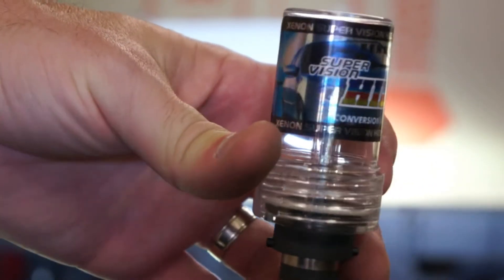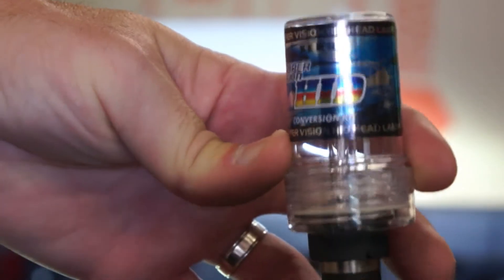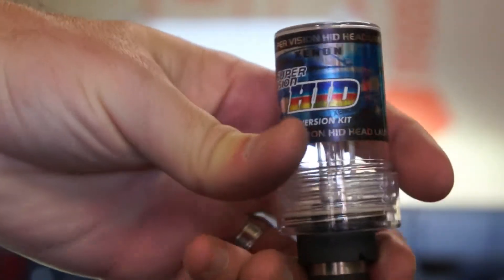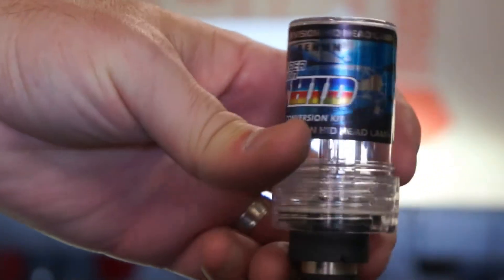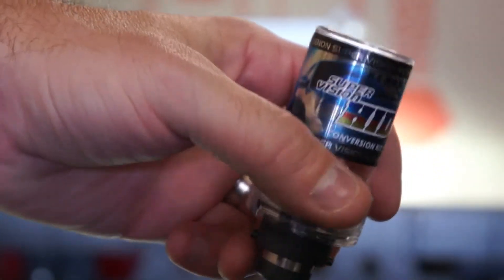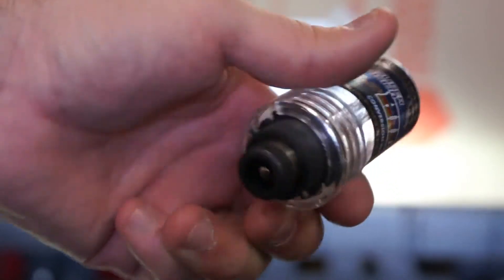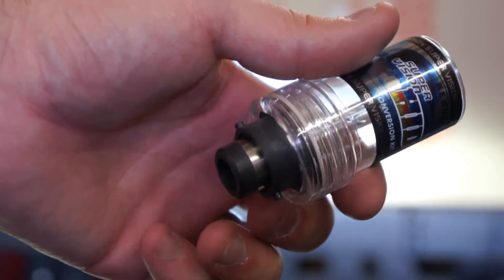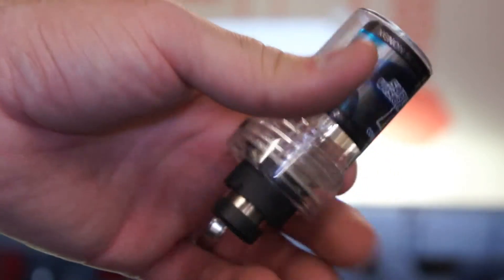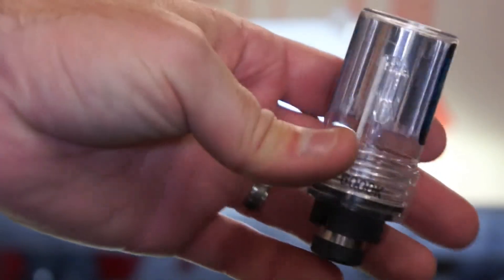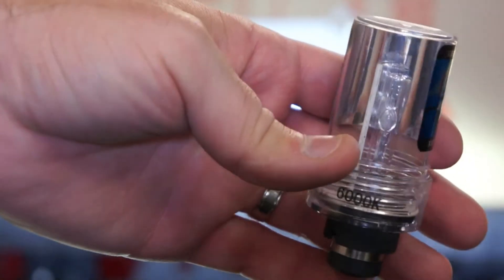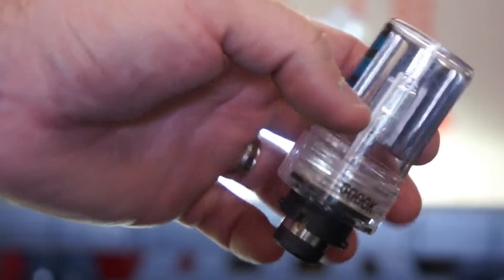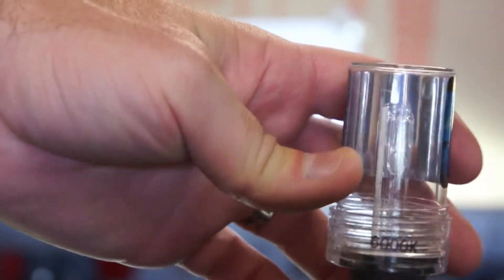Here's the bulb that's on right now. It's a 6000K HID bulb. I got it off Amazon for less than $10 for two of them, and it's supposed to be a universal bulb. You can see inside there, this is just an outer protective case for it.